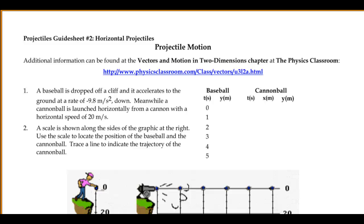Okay, this is the first video for guide sheet number two on projectiles. We're looking at horizontal projectiles. We're going to do a comparison between a dropped ball and a ball shot horizontally out of a cannon and see how they're similar and different.